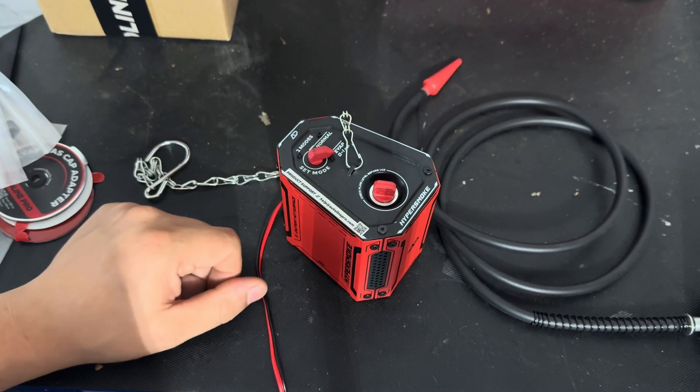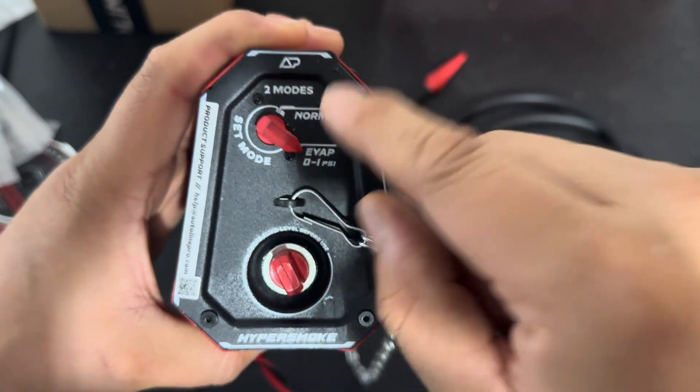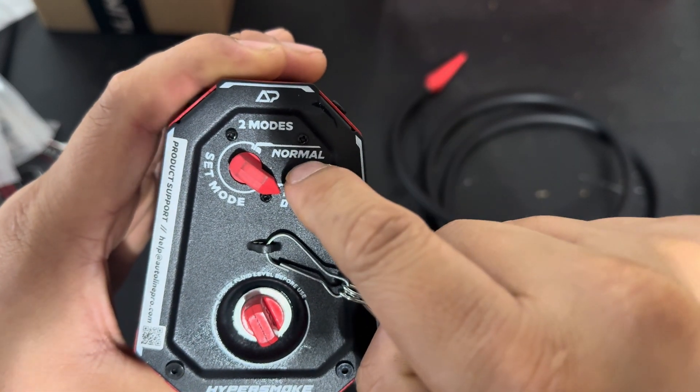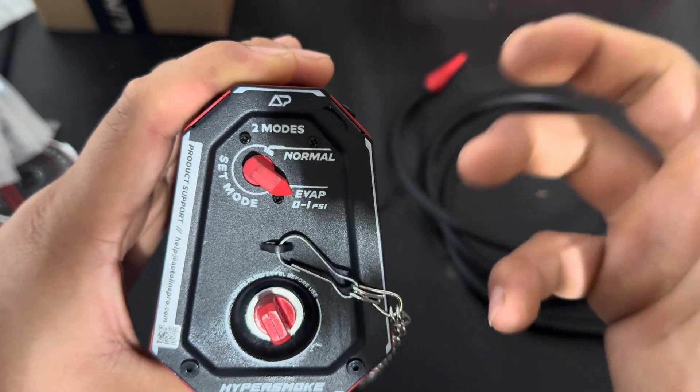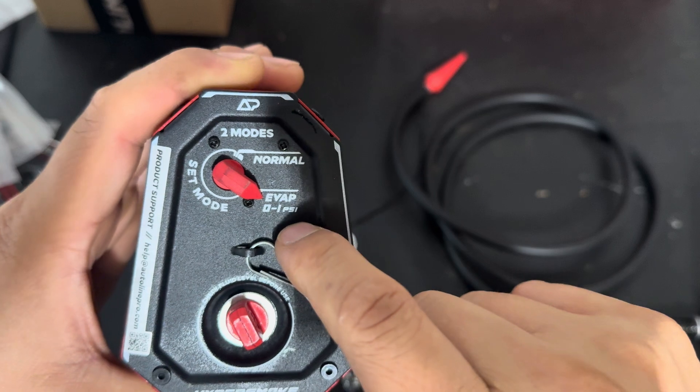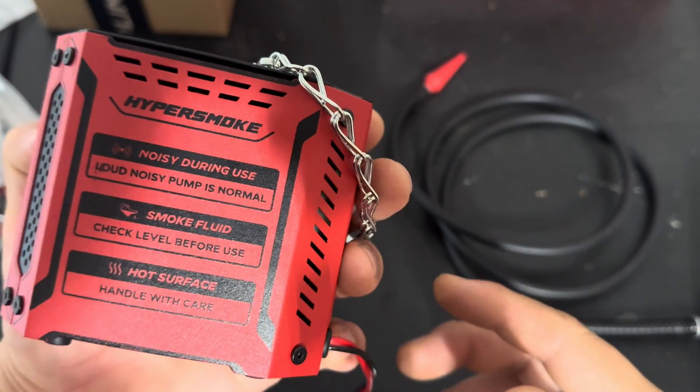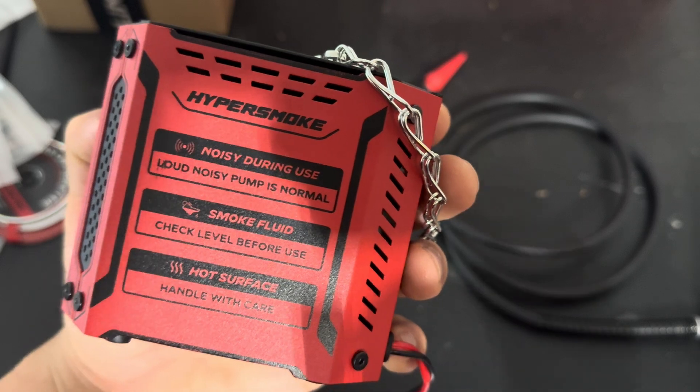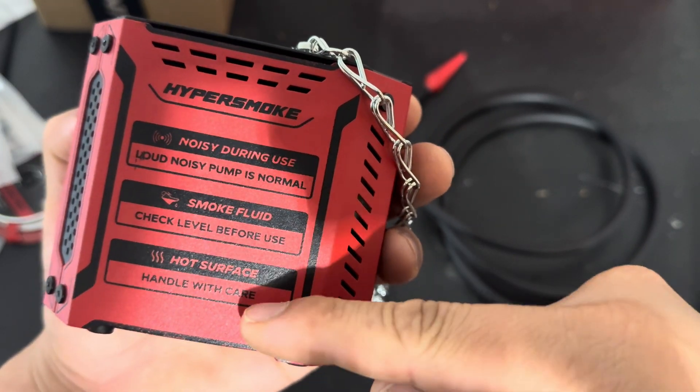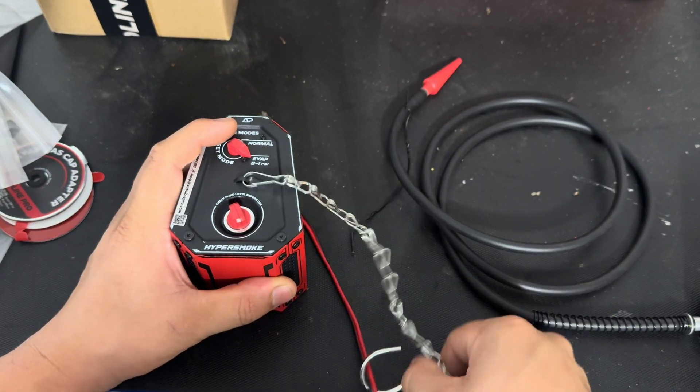So for the machine, here we have it. Normal mode, I believe that's just air, but we'll double check here in a second. And then evap, that's going to smoke the system, 0 to 1 PSI, which is pretty good. You don't want a lot of pressure in there. Noise, either in use, it's normal. Smoke fluid, check the load for use, handle with care, probably gets hot from burning that oil.